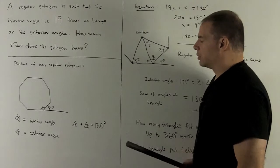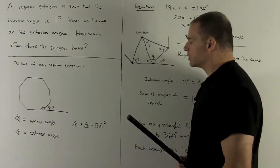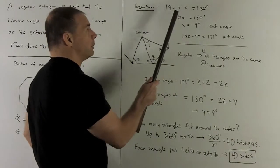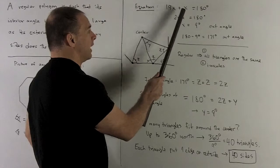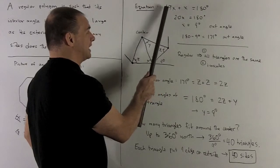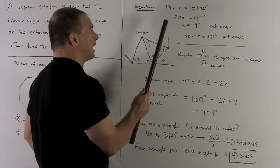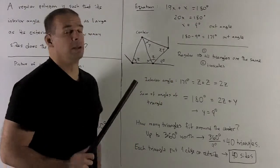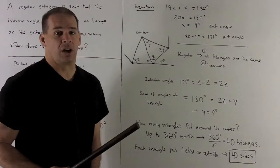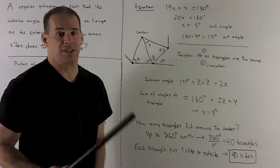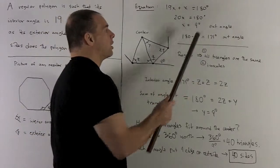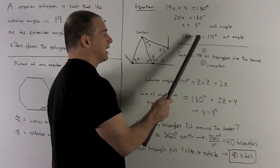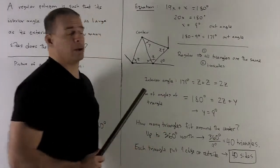We're going to make big use of this. The first thing we note, if I call the exterior angle x because it's smaller, then the interior angle is going to be 19 times as large, so that'll be 19x, and their sum is going to be equal to 180 degrees. So that's going to give me 20x is 180 degrees, or x is equal to 9 degrees. So that's my exterior angle, and then we note the interior angle is just going to be the difference between 180 and 9, so it's 171 degrees.